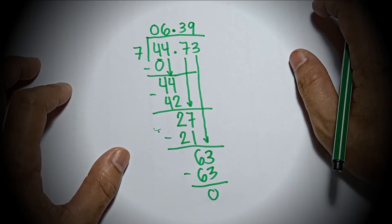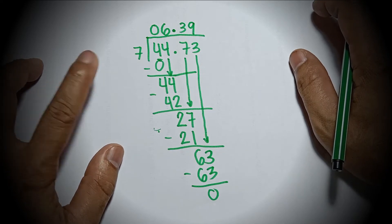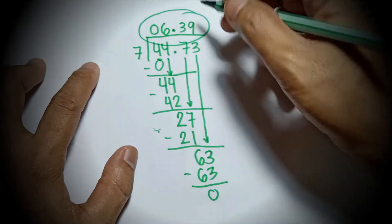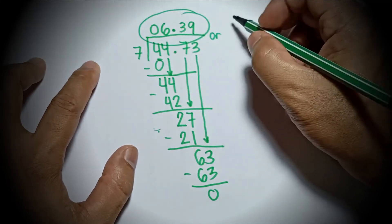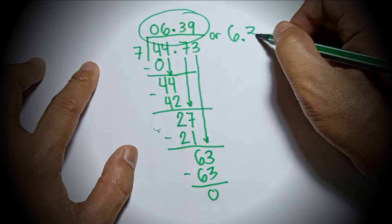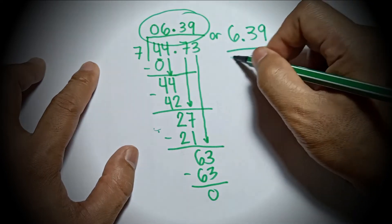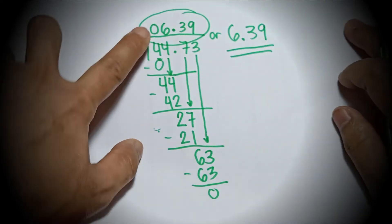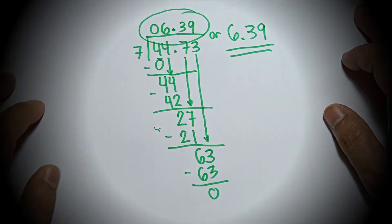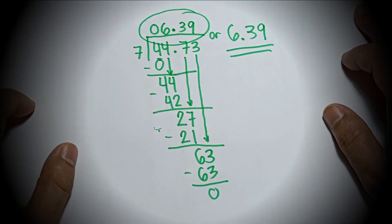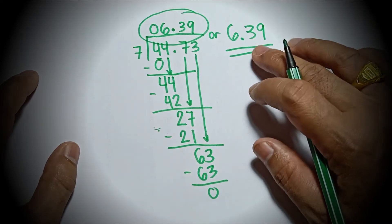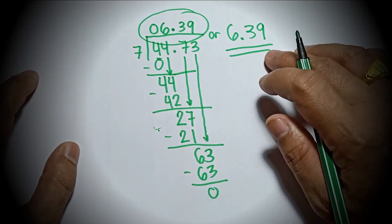So when you divide 44.73 by 7, the answer is 6.39. A leading 0 at the beginning of the number is the same as 6.39.